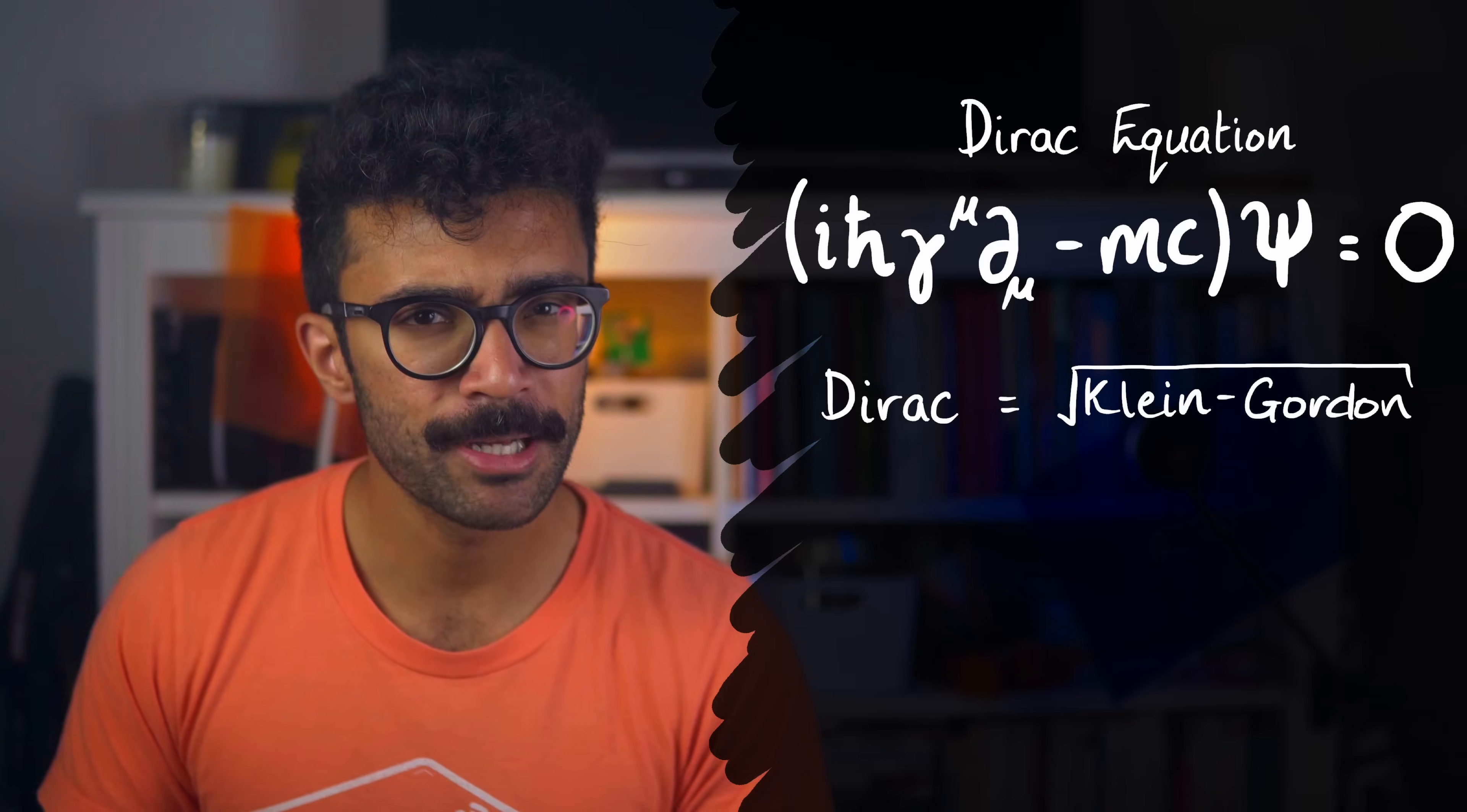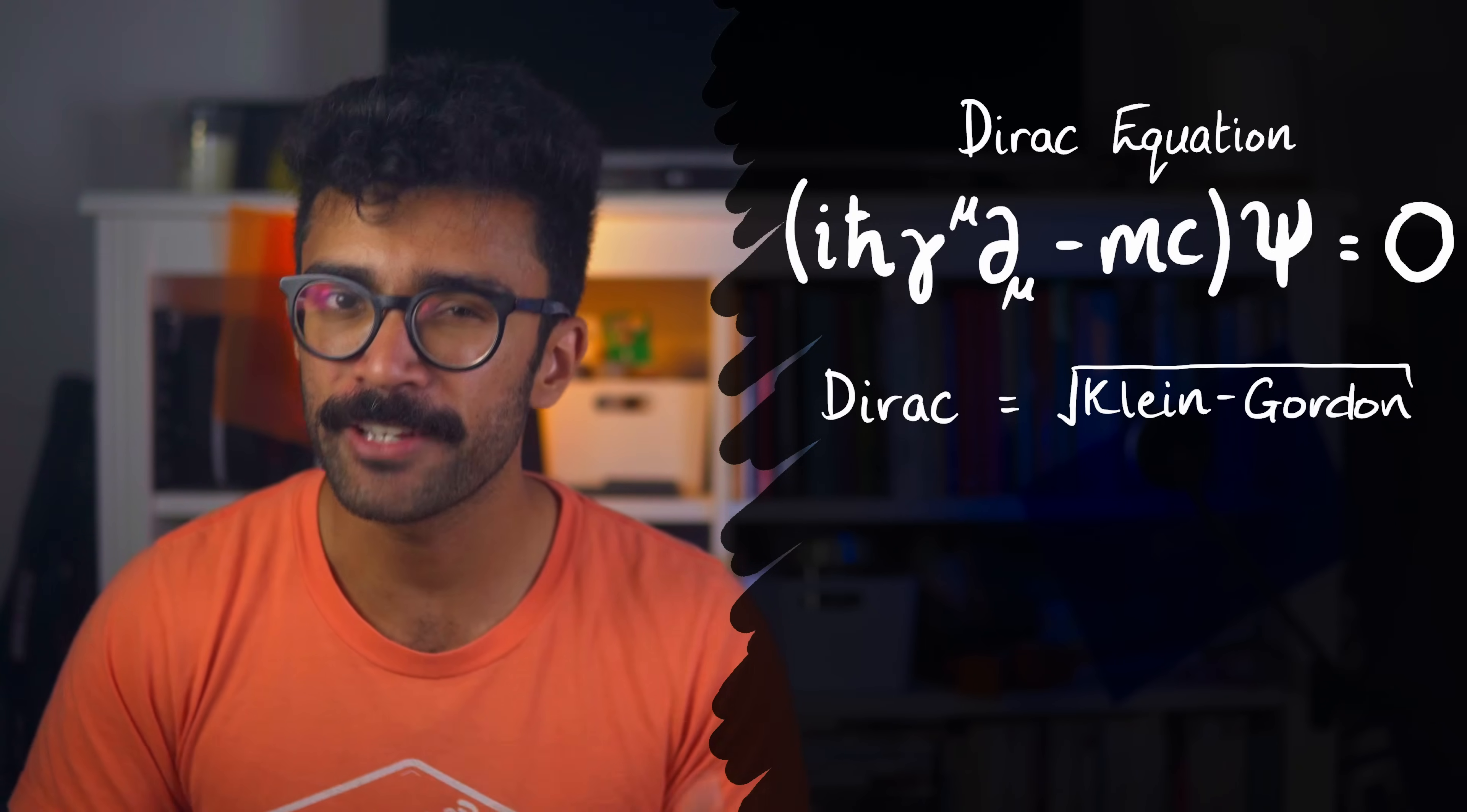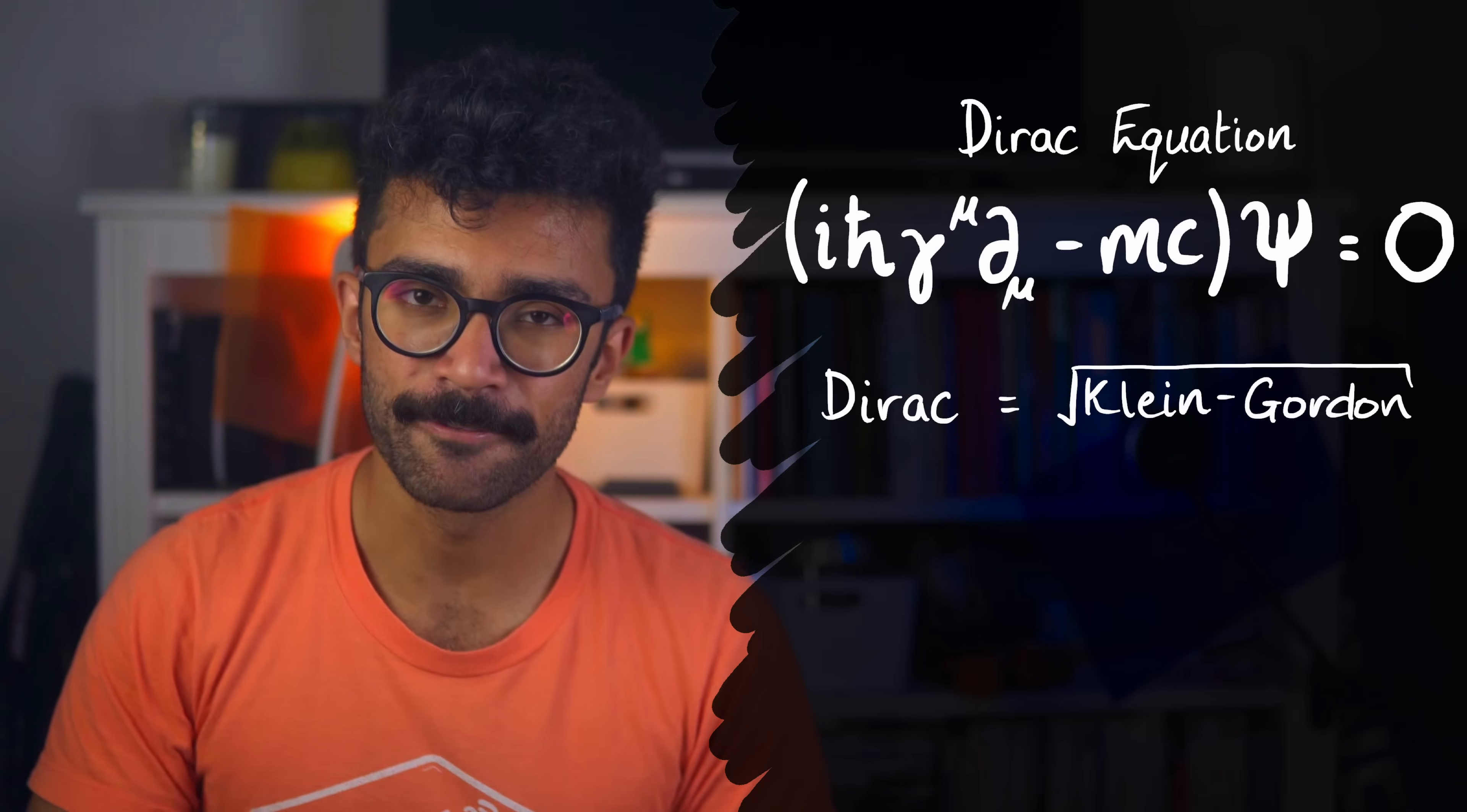Or in other words, if you do the equivalent of squaring the Dirac equation, you get the Klein-Gordon equation. So how does the Dirac equation account for spin when its square, the Klein-Gordon equation, doesn't? And again, remember I'm using very loose terminology here. It's just to give us a feel of the two equations.